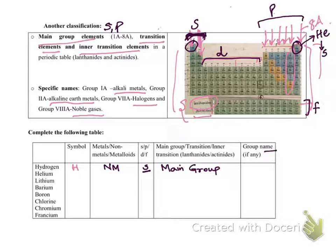So if you're writing s or p here, that means this will definitely be main group. Any particular group name for hydrogen? Hydrogen is in the first A group. First A group elements are known as alkali metals, but we do know that hydrogen is not a metal, it's a non-metal, so that means there will be no specific group name.